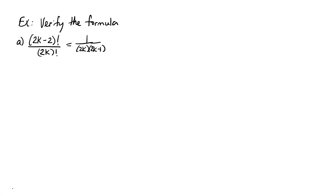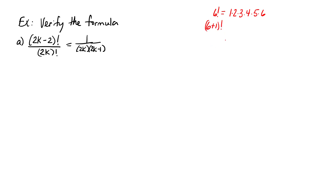Here we're asked to verify the formula that says (2k-2) factorial over (2k) factorial is equal to 1 over 2k times (2k-1). The key is to understand what a factorial is. Let's use numbers instead of variables: 6 factorial means 1 times 2 times 3 times 4 times 5 times 6.